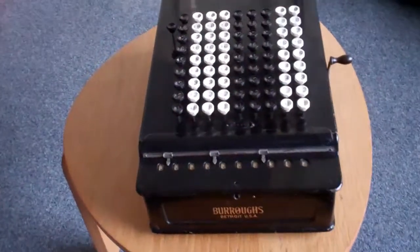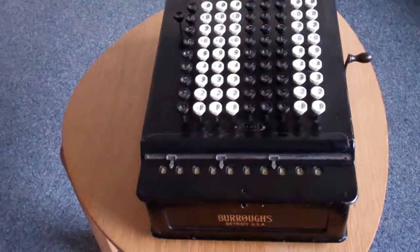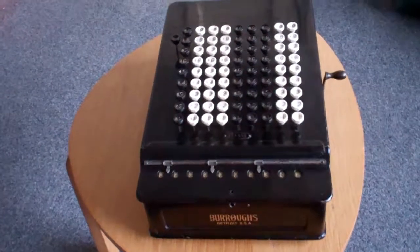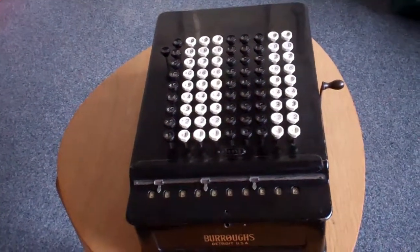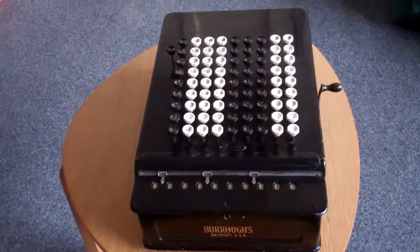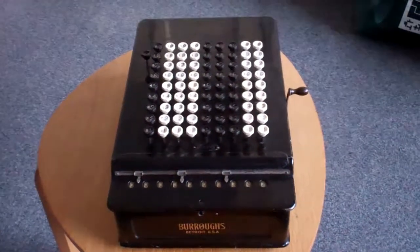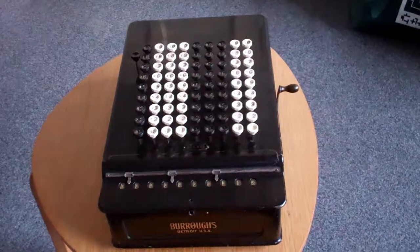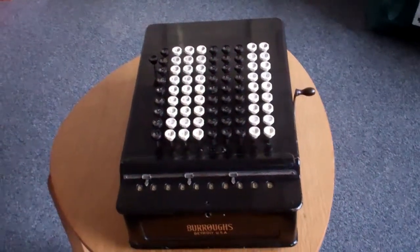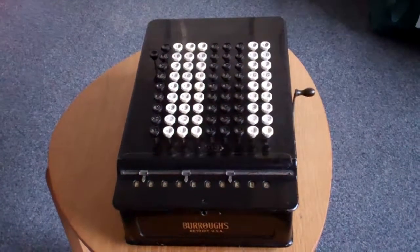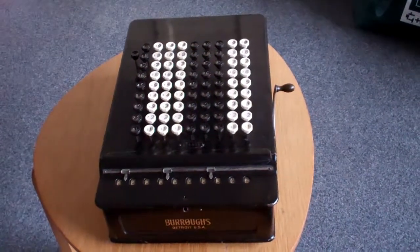This is the Burroughs Calculator. The Burroughs Adding Machine Company made adding machines which also were listing machines. They printed out what they were calculating, but in 1911 they decided to make a calculator styled almost the same as the Comptometer by Felt & Tarrant.